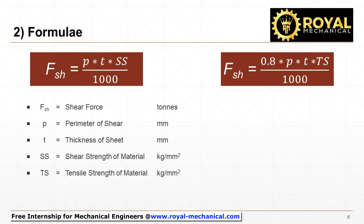Where: Fsh is the shear force in tons. P is the perimeter of shear in millimeters. T is the thickness of sheet metal in millimeters. Ss is the shear strength of the material in kg per square millimeter. Ts is the tensile strength of the material in kg per square millimeter.